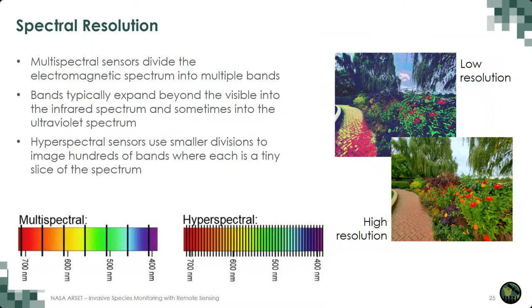Satellite sensors can collect regions on the electromagnetic spectrum at various wavelengths and divide that range into bands. Bands are essentially how big a portion of the spectrum is included in the measurement. Spectral resolution signifies the number and width of spectral bands of the sensor. The higher the spectral resolution, the narrower the wavelength range for a given channel or band. More and finer spectral channels enable remote sensing of different parts of the Earth's surface.